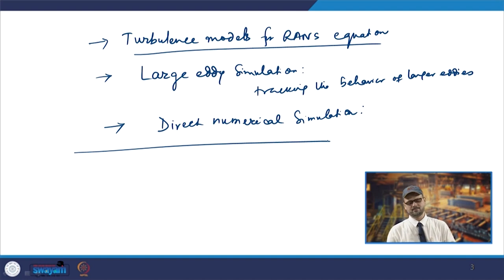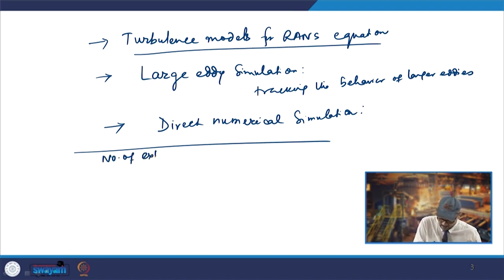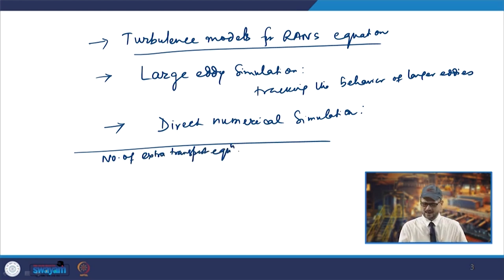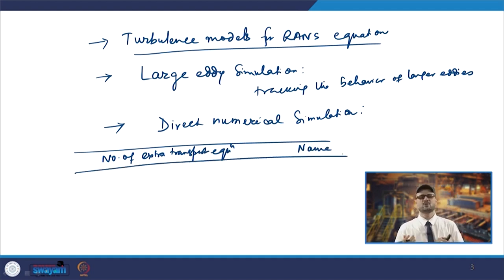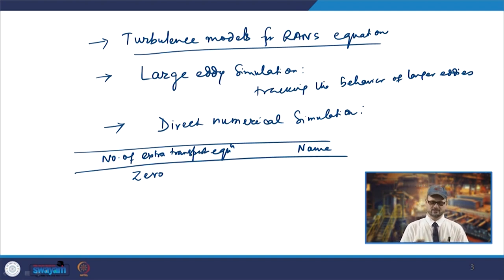Depending on the number of transport equations to be solved, the models are named accordingly. For the classical mixing length model there is no extra equation — just an algebraic expression for eddy diffusivity in terms of the mixing length, which is a function of the characteristic length of the flow domain. This is a zero-equation model.